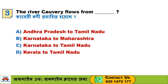Next question: The river Kaveri flows from — A. Andhra Pradesh to Tamil Nadu, B. Karnataka to Maharashtra, C. Karnataka to Tamil Nadu, D. Kerala to Tamil Nadu. The correct answer is C, Karnataka to Tamil Nadu.